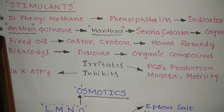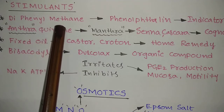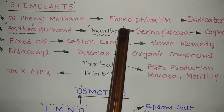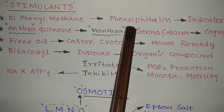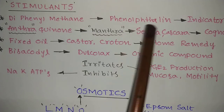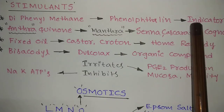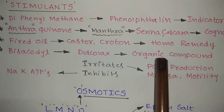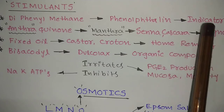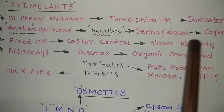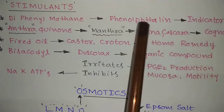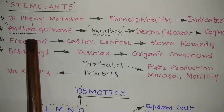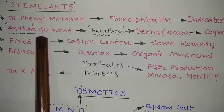The next class is stimulants, also important for constipation treatment. One subclass is diphenyl methane (DPM). An example drug is phenolphthalein — yes, the same acid-base indicator used in chemistry. In this stimulant class, we use different categories: indicators, pharmacognosy plants, and organic compounds.